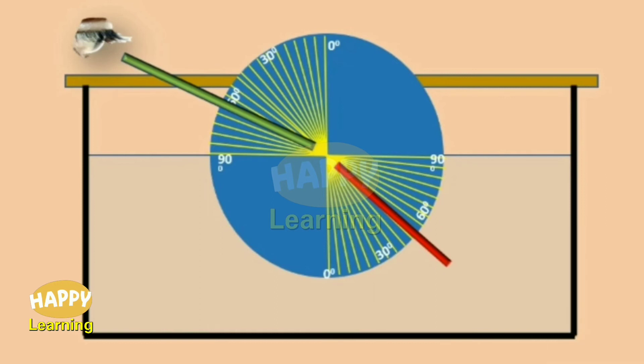From this activity, we can generalize that when the light ray travels from denser medium to rarer medium, it bends away from the normal. The angle of the straw in the air is greater than the angle of the straw in water. I repeat, the light ray travels from denser medium to rarer medium, then it bends away from the normal. r is greater than i. Angle of refraction is greater than angle of incidence.